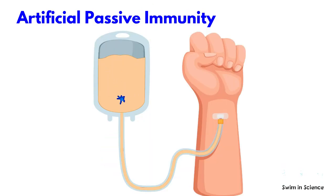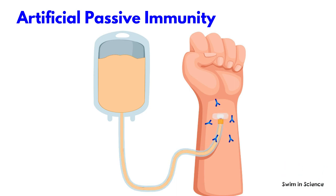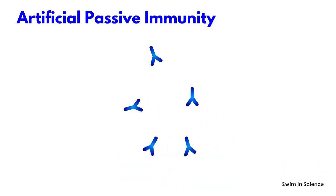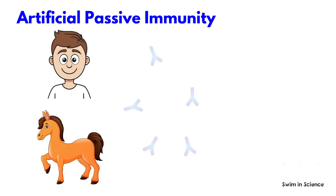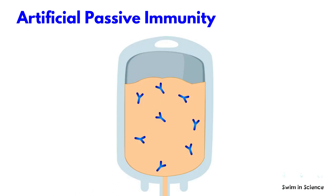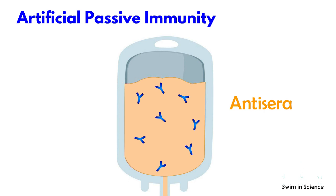Artificial passive immunity is conferred by the injection of antibodies into an individual's body. These antibodies are generated by a different person, or animal, or artificially inside a laboratory. These antibody-containing preparations are termed anti-sera, and are used as a therapeutic treatment when there is a risk of some infections.